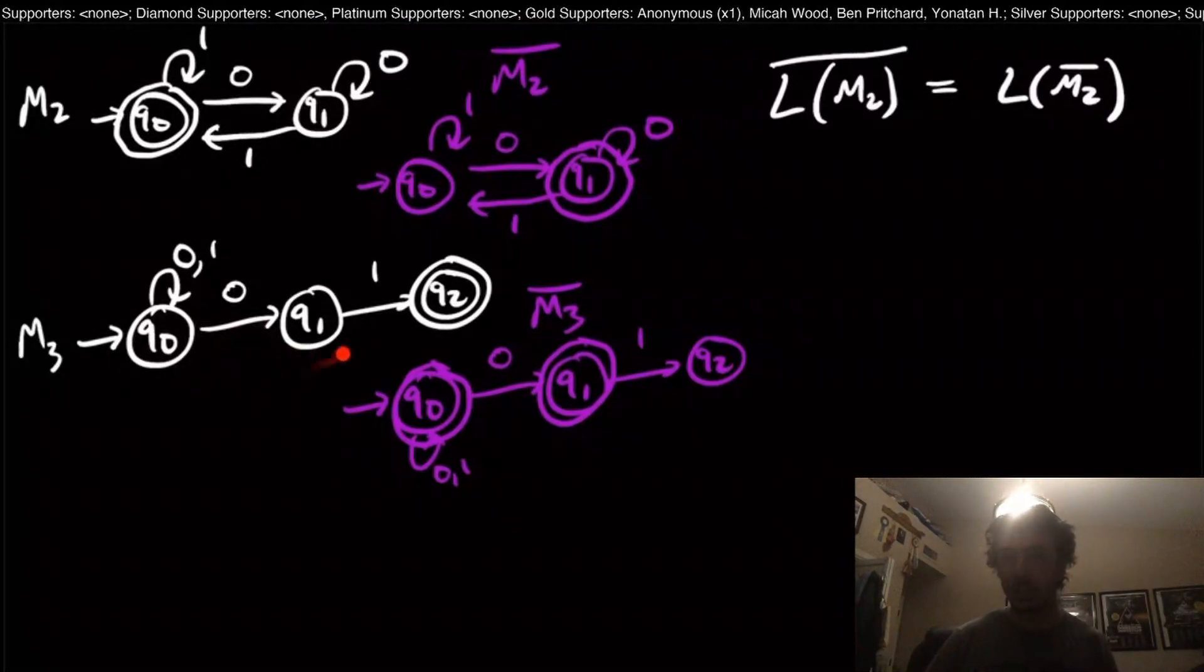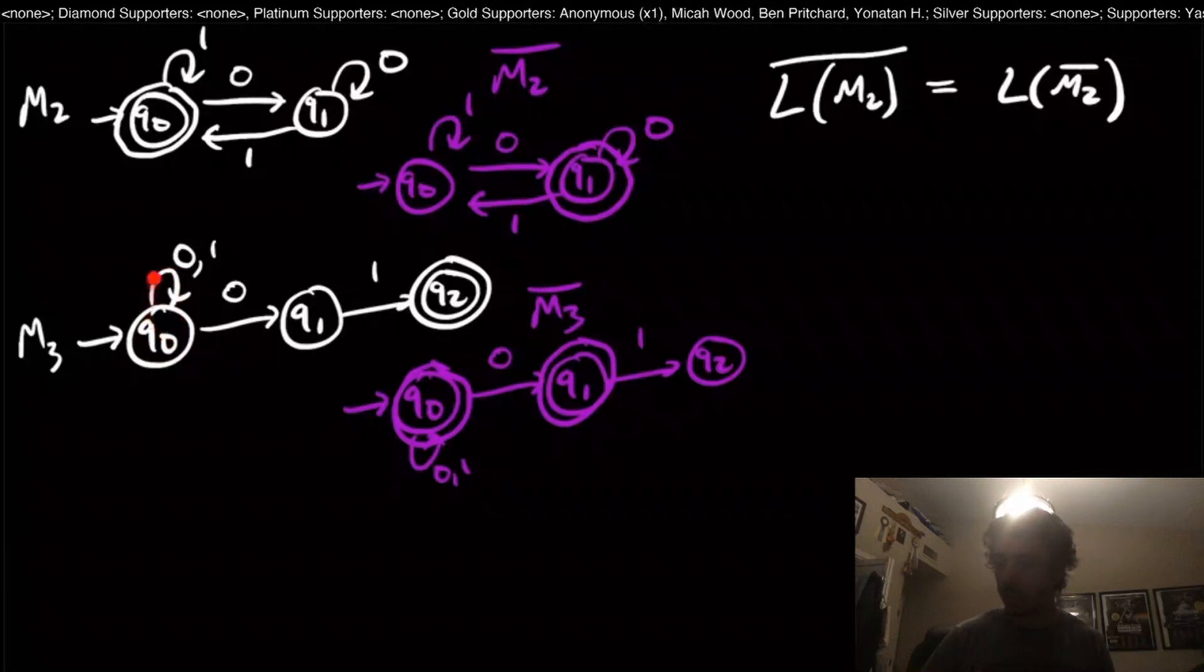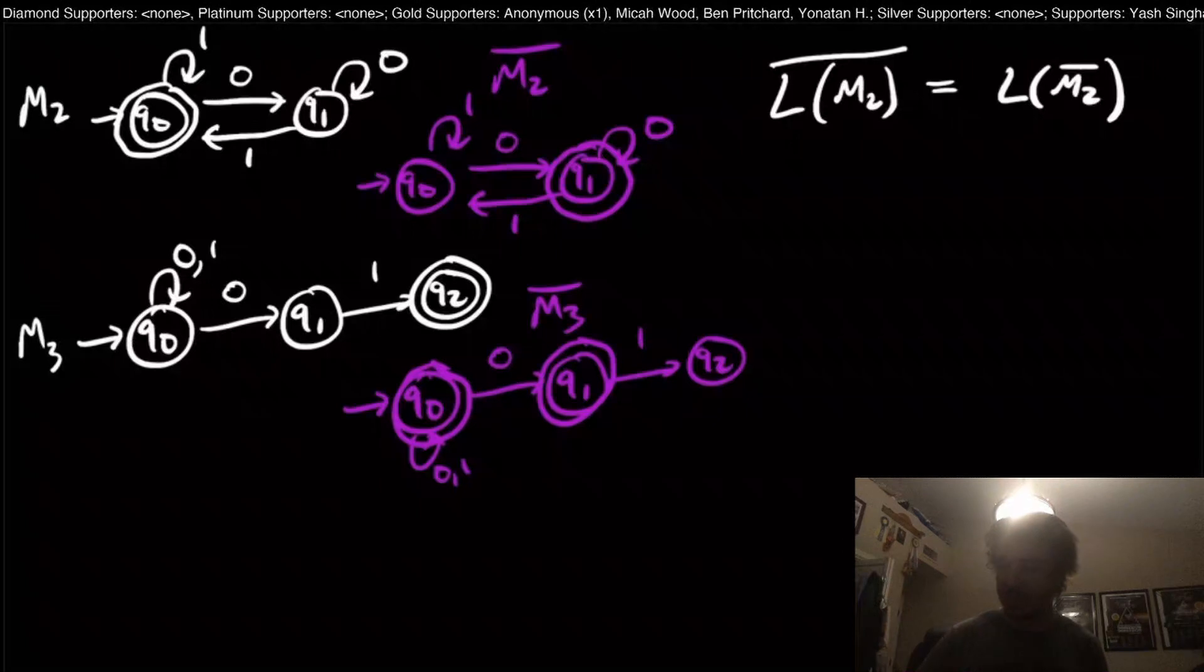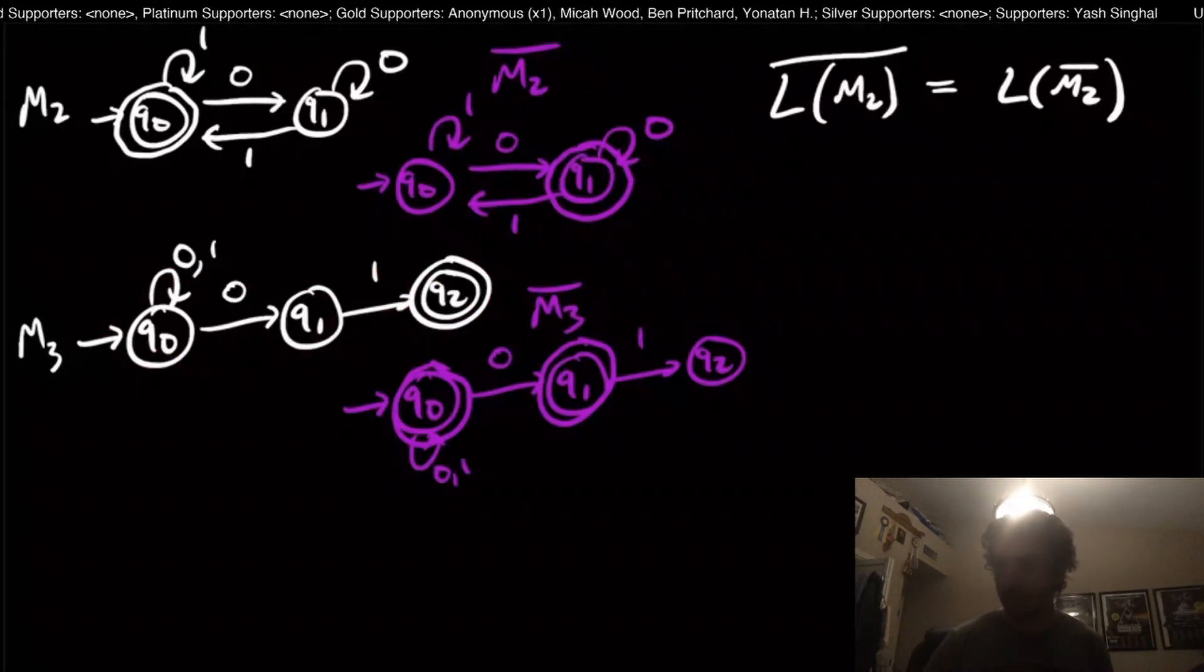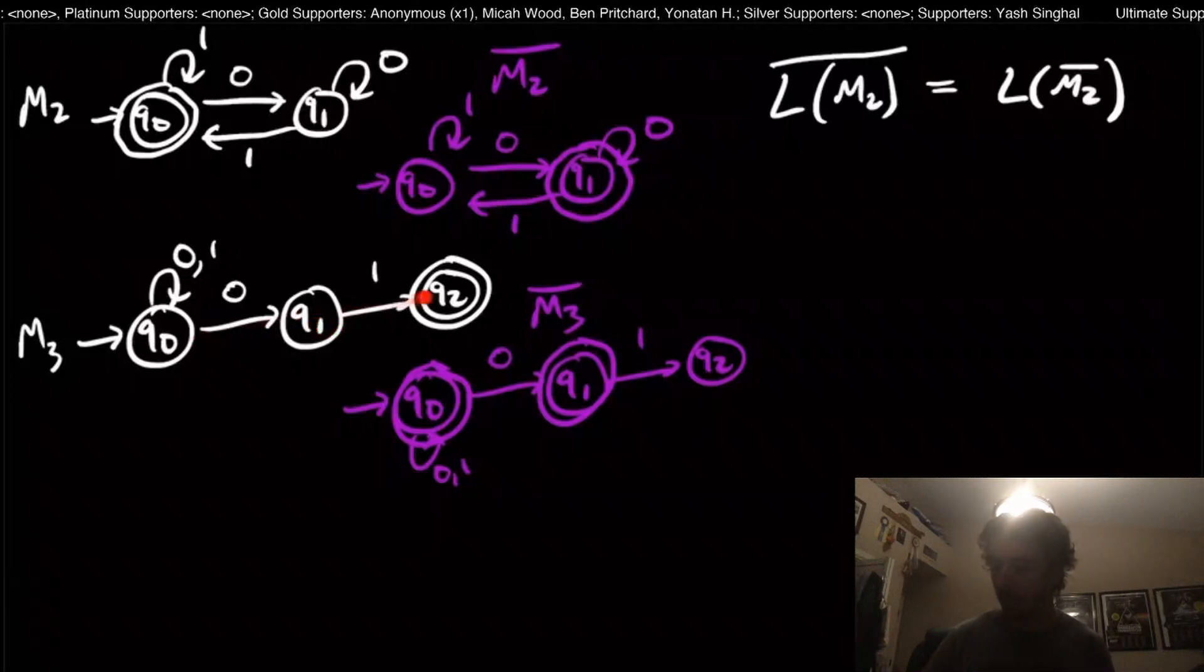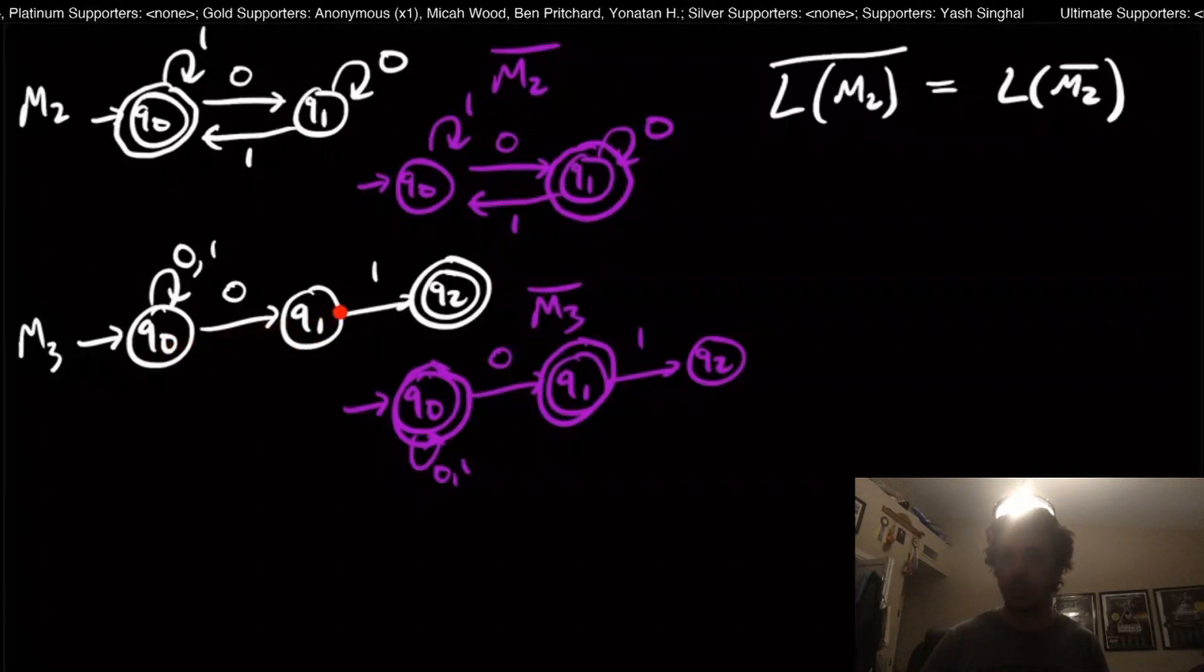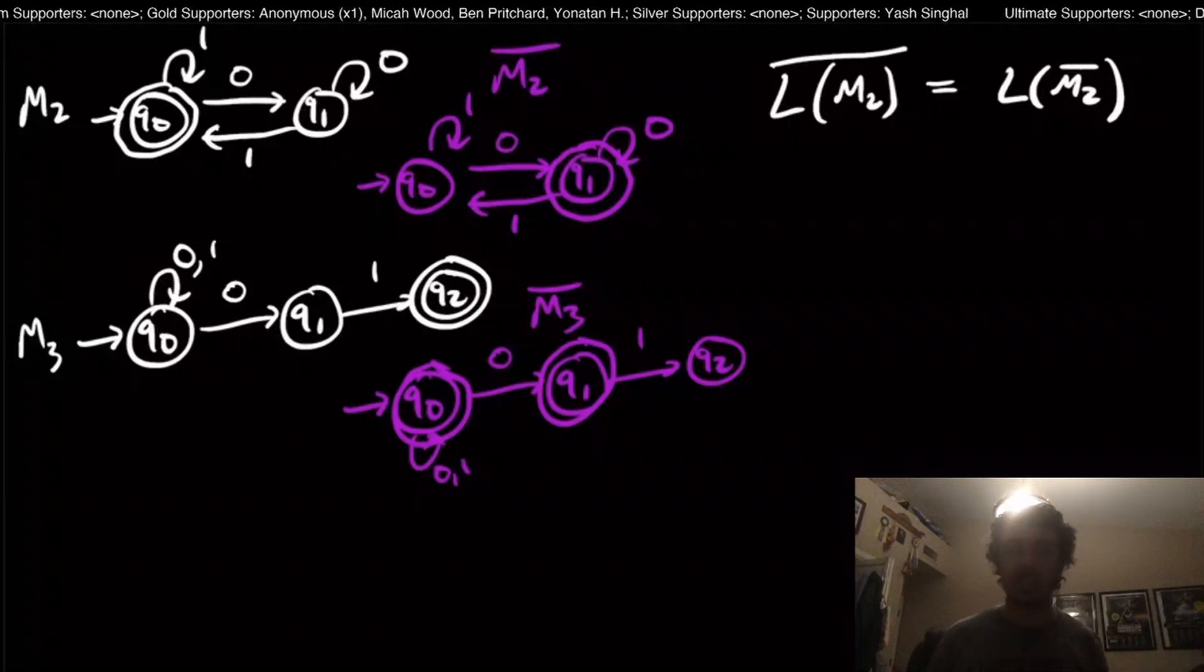Notice here that there are some transitions that are missing, and also look at Q0—it has a non-deterministic choice right here. There's a 0 and a 0 right here. This machine doesn't accept all strings because it accepts only the strings that end in 01. If you don't end in 01, you're going to either get stuck in this state or in this state. If you ended in 01, you had to have entered Q2. It doesn't accept the empty string, for example.